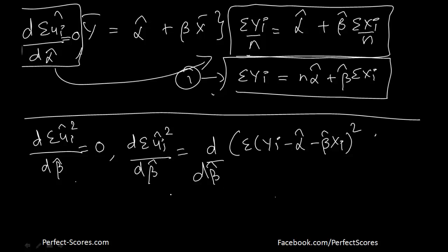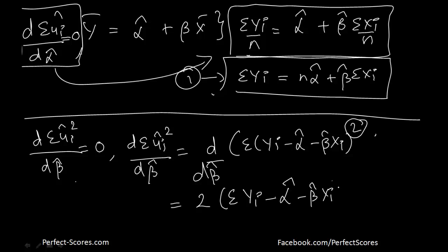Since we're doing the derivative with respect to β̂, first we'll have a 2 out front. Then we're going to have summation of (yᵢ minus α̂ minus β̂·xᵢ) into xᵢ — because this β̂ has another xᵢ with it, so the chain rule gives us an xᵢ multiplied through. That is supposed to be equal to 0.